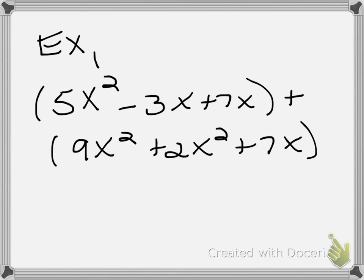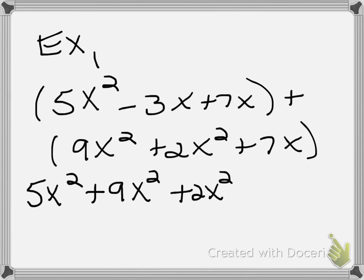You can choose to put it vertically or horizontally. So lining them up as 5x² + 9x² + 2x² - 3x + 7x + 7x. Now the like terms are next to each other.